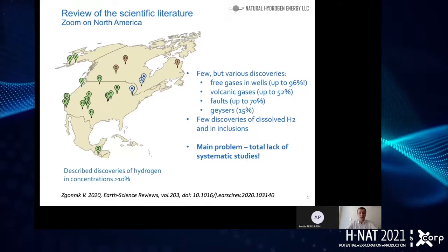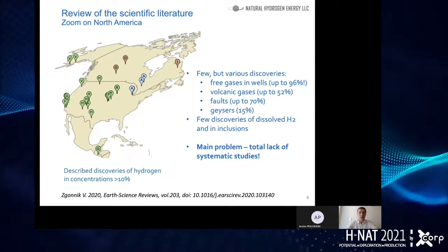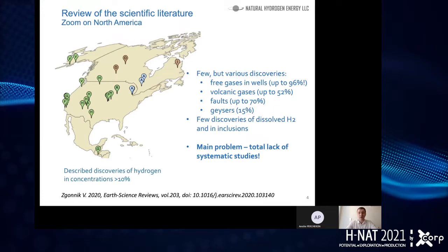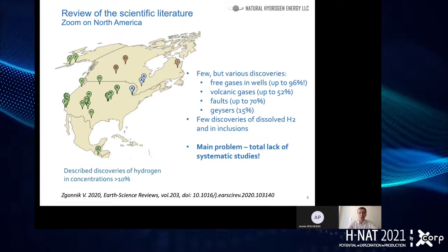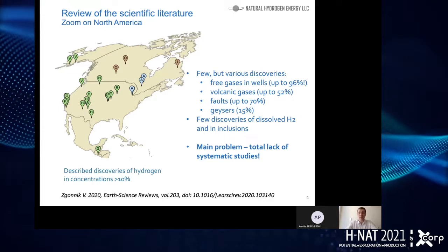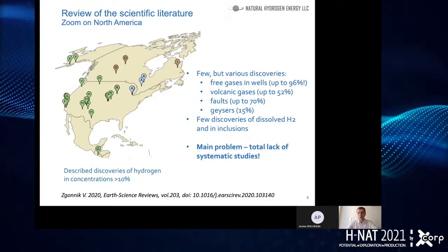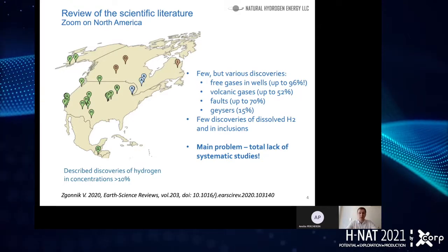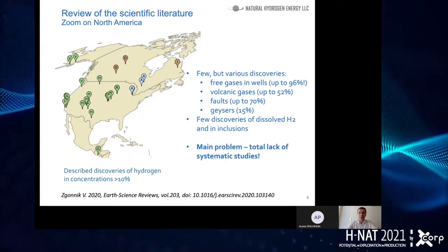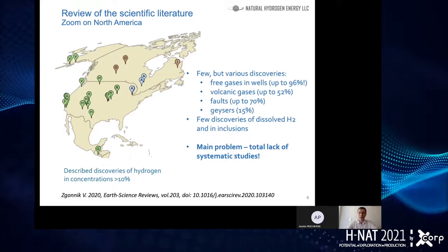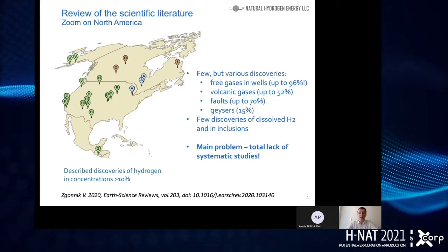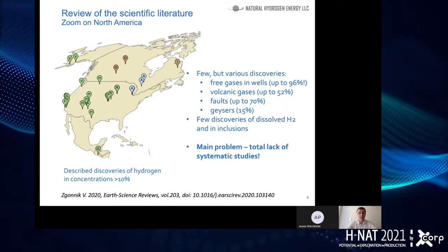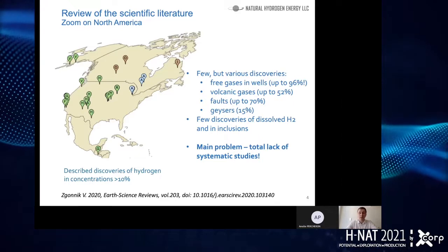When we zoom to the North American continent we see several place marks: the green ones are for free gases, the blue ones are for hydrogen dissolved in water, and the brown ones are for hydrogen found in inclusions. They come from various geological environments — gases from wells drilled mostly for hydrocarbons, volcanic gases, gases in faults where concentrations can reach up to 70%, and gases from geysers.